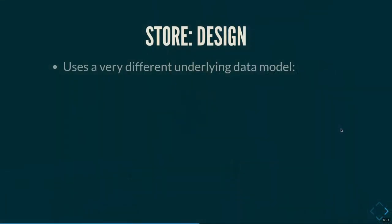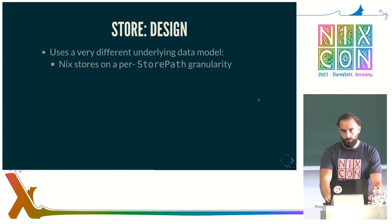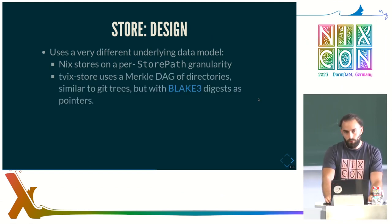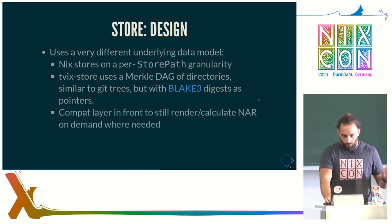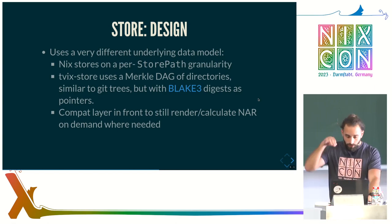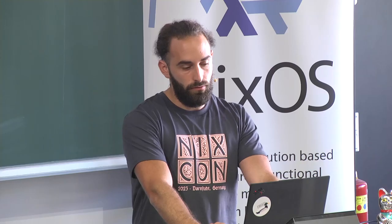The store is the other bigger component. It uses a very different underlying data model. Nix stores everything at a per-store-path granularity, then has info about the store path in a SQLite database and the NAR file, which encodes the contents of that store path in an archive format. Whereas Twix uses a Merkle directed acyclic graph of directories similar to Git trees. We use Blake3 as the hashing method, which has a bunch of advantages. We have a compatibility layer that can still return us NAR files and the necessary structures from store path information where needed.